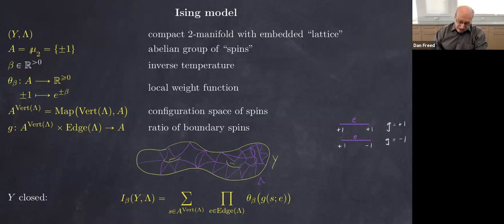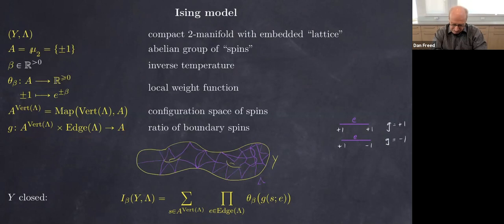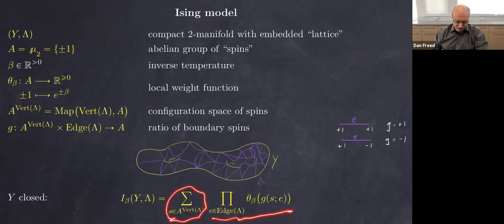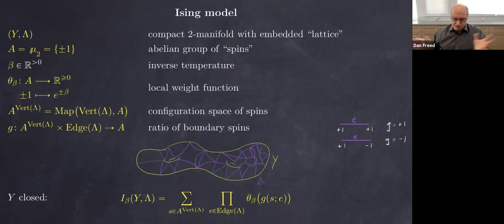Given a configuration, on each edge we look at the spin value at each vertex and take the ratio — in this case plus one or minus one. Given a configuration and a particular edge we get a group element, then take the product over all edges; that's the weight we had before. The partition function is the sum over all configurations, and if we have a closed surface we get a well-defined finite number because both the product and the sum are finite.